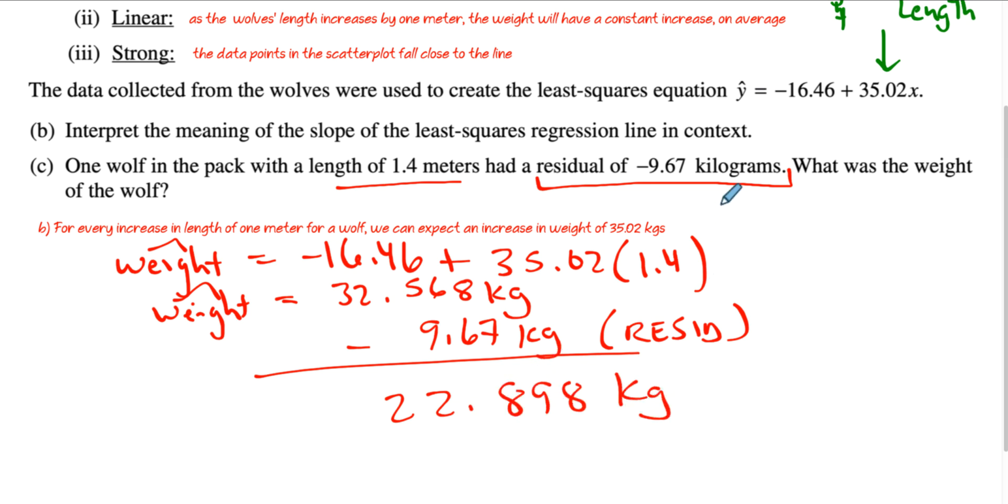And that would be the weight of the wolf, because it's below the line. Because we predict 32 and it's at 22, that means it has a negative residual. So that is question number one from 2017. Hey, easy, it was a howl. Good luck AP Stats.